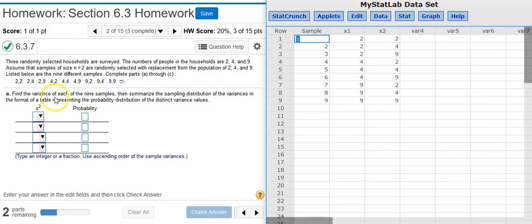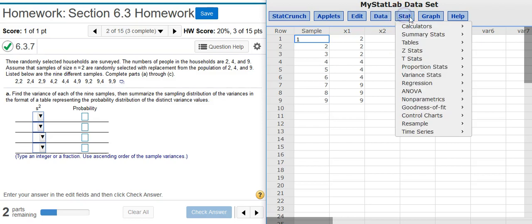And now again, the first thing we need to do here, it says find the variance for each of the nine samples. Well notice here your samples are in rows. So the first sample, you went to the first house and there's two people in the household, then you went to a second house and there's two people in that household. So there's your first sample and you did that nine times to get nine samples here. So the variance for each of these samples, variance is a sample stat, so we're just going to go to Stat, Summary Stats, Rows, because here our sample information is in rows.